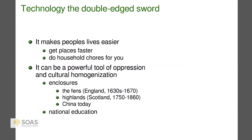National education is an example of something most of us think is good — people being able to read. But it's also a force for cultural oppression and homogenization. For example, for about 500 years in the country I currently live in, if a school child spoke Welsh in school, you would hang a sign around their neck as a badge of shame, and that is called the Welsh Not.